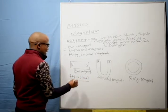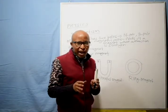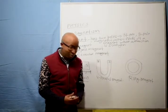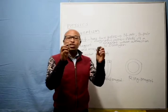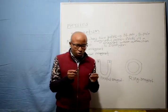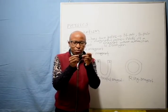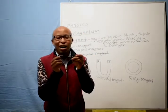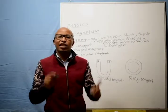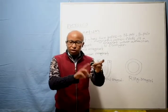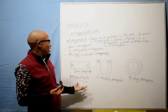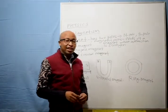Now we can go directly to attraction and repulsion. Attraction is where different poles come together — they attract each other. For example, if you bring two magnets closer, you will see they attract each other. They come together because they are of different poles — for example, a North pole and a South pole. That coming together of poles is attraction.